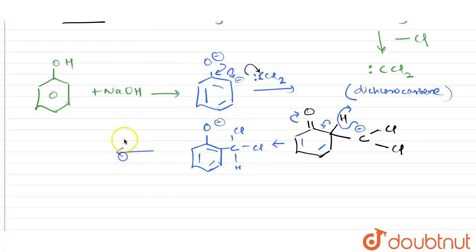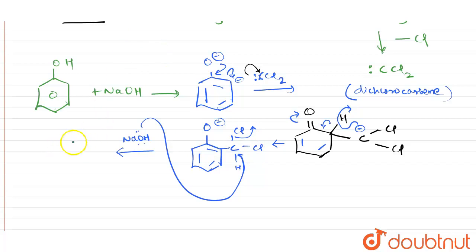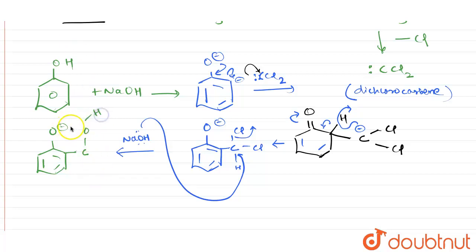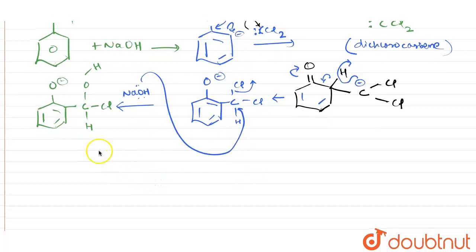In the next step, NaOH is present and acts as a nucleophile, attacking the carbon bearing CCl2. This facilitates the removal of one chlorine atom. A hydroxyl group is gained in place of the lost chlorine, giving a structure with O⁻, one remaining chlorine, and one hydrogen on that carbon.